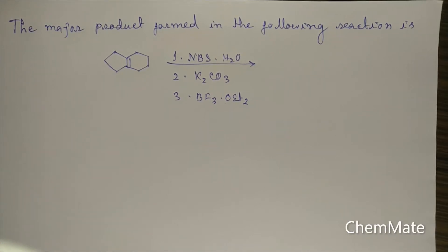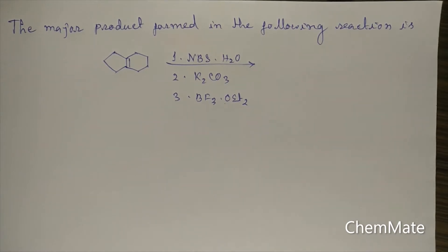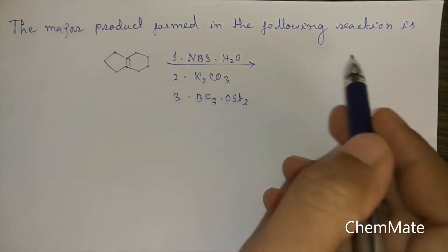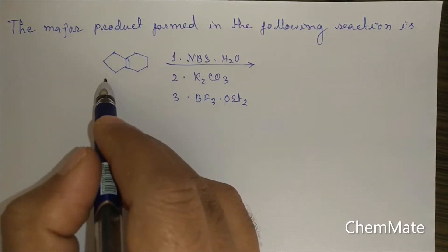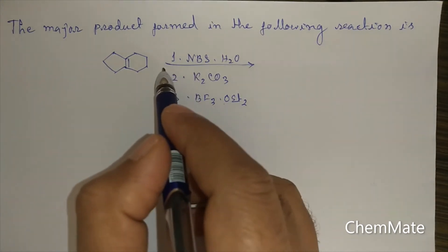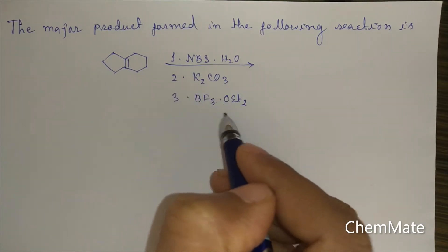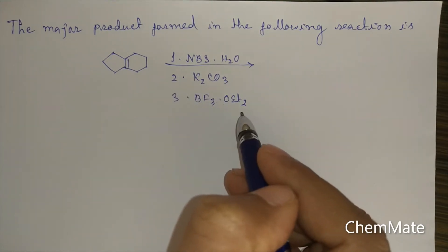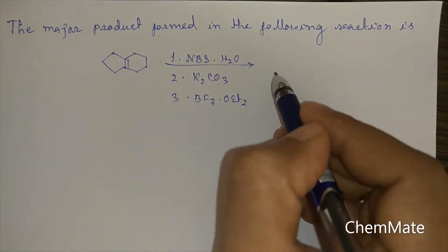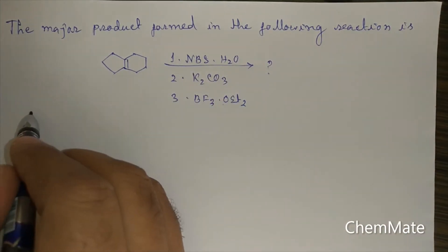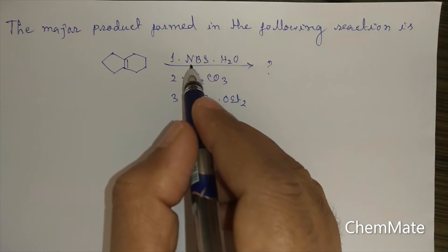Today I am going to discuss another question from GER 2015. The question asks for the major product formed when a substrate is treated with NBS and H2O, then K2CO3, and then BF3 in diethyl ether. So NBS with H2O — NBS is N-bromosuccinimide.